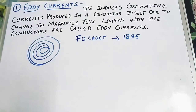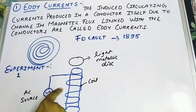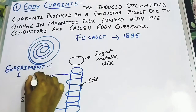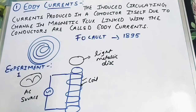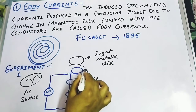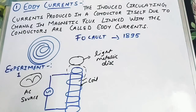Now we are going to start demonstrating and understanding what eddy current is. We begin with Experiment 1. Here you can see the diagram — what Foucault observed when performing this experiment. We have taken a solenoid connected to an AC source. When the current is changing, the magnetic flux is induced in the circuit. Because of the flow of electrons or the flow of current, a magnetic field is produced.